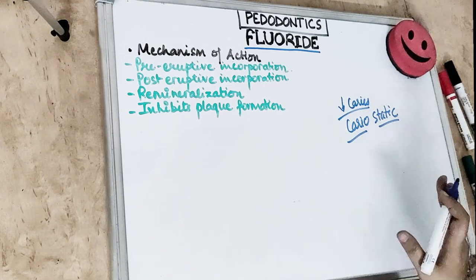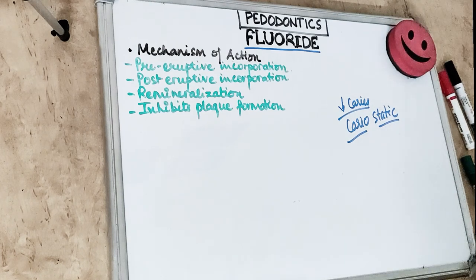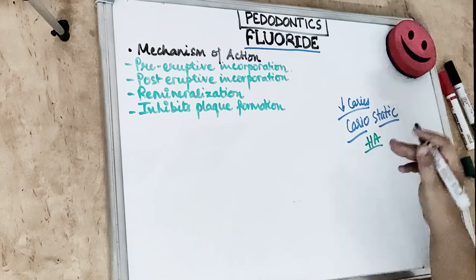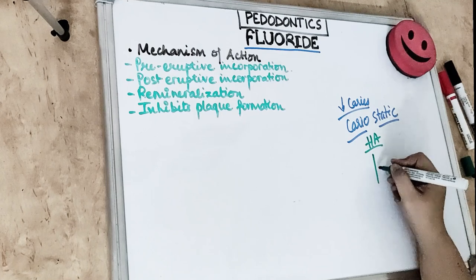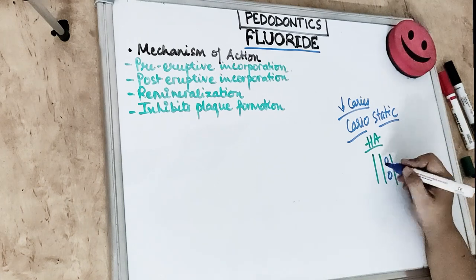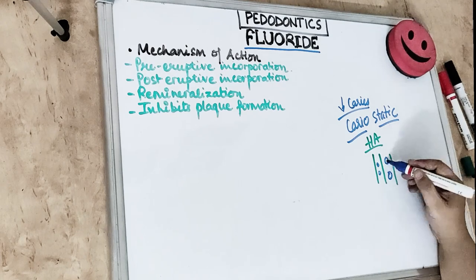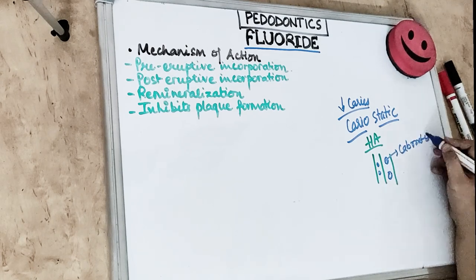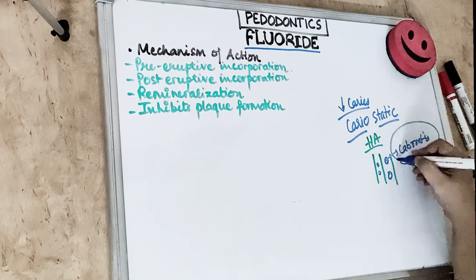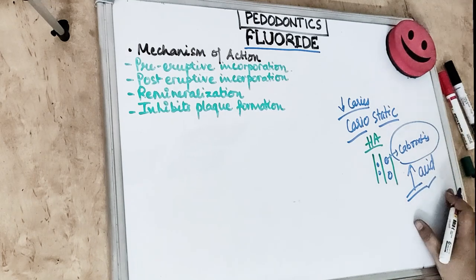To study the cariostatic effect of fluoride, we must know the structure of enamel and the process of demineralization. The enamel consists of hydroxyapatite crystals arranged in rod-like structures that run parallel to the long axis. There are structural imperfections present between the enamel crystals — these are carbonates or magnesium — and these imperfections increase the acid solubility of the enamel crystals.